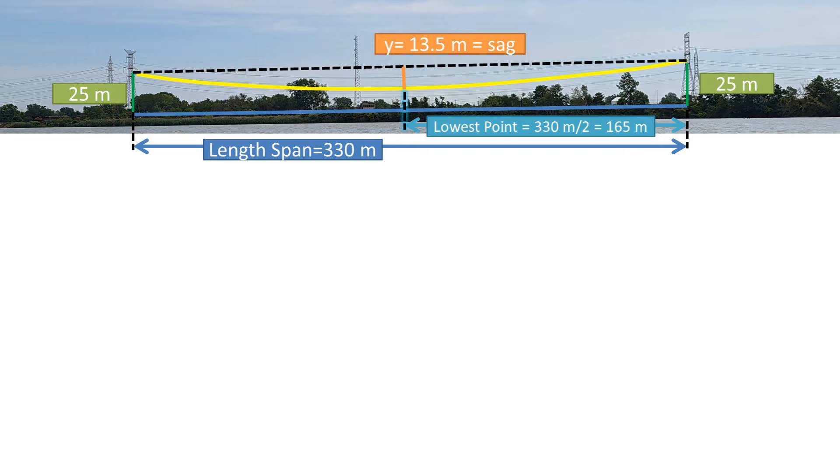In this problem, we have a power line that spans a distance of 330 meters and has a sag distance of 13.5 meters from the top. The power line is fixed at the same height on either end, so the lowest point is at half the span of 165 meters.